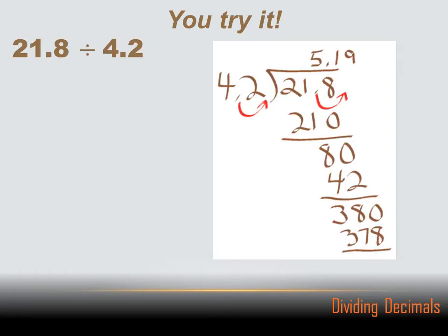21.8 divided by 4.2. Well, I set up my division problem, and then the first thing I got to do is make my divisor a whole number. Right now it's 4.2, but I got to make it a whole number, and I can do that by moving the decimal place one to the right. If I move the decimal place of the divisor one to the right, I got to move the dividend decimal place one to the right.